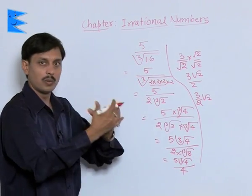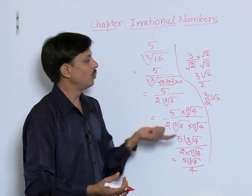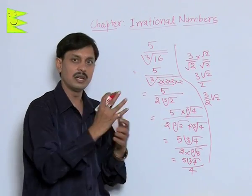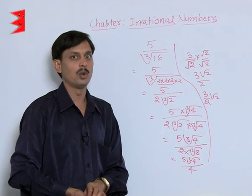This is the way when only a single term in the denominator is given then we can multiply it with its SRF. Now, I will take the problems of the binomial terms in the denominator.